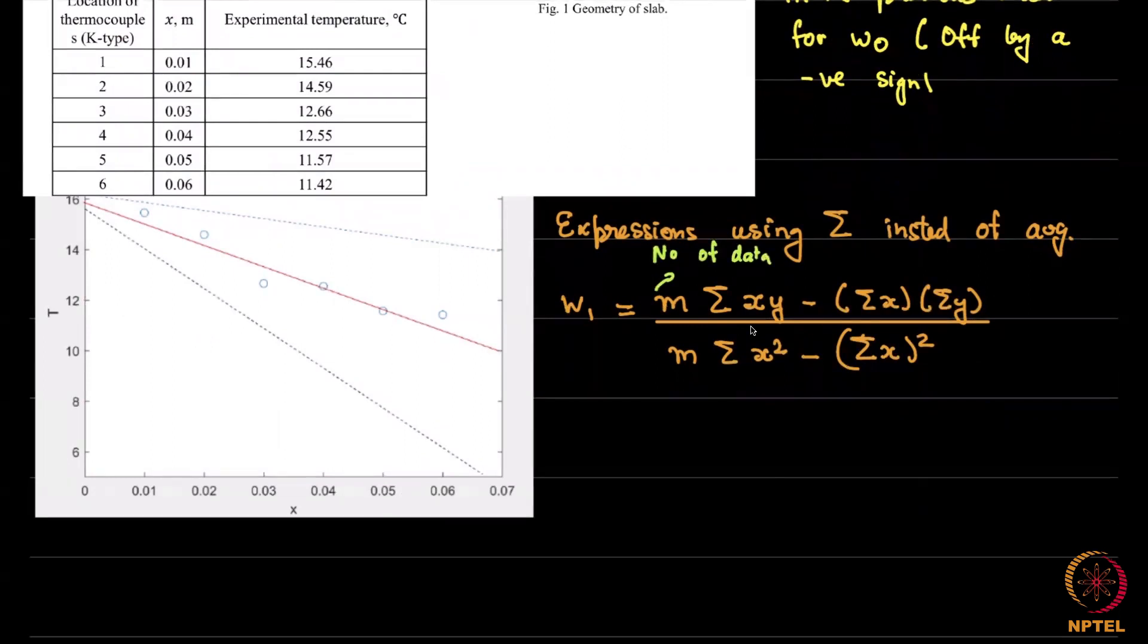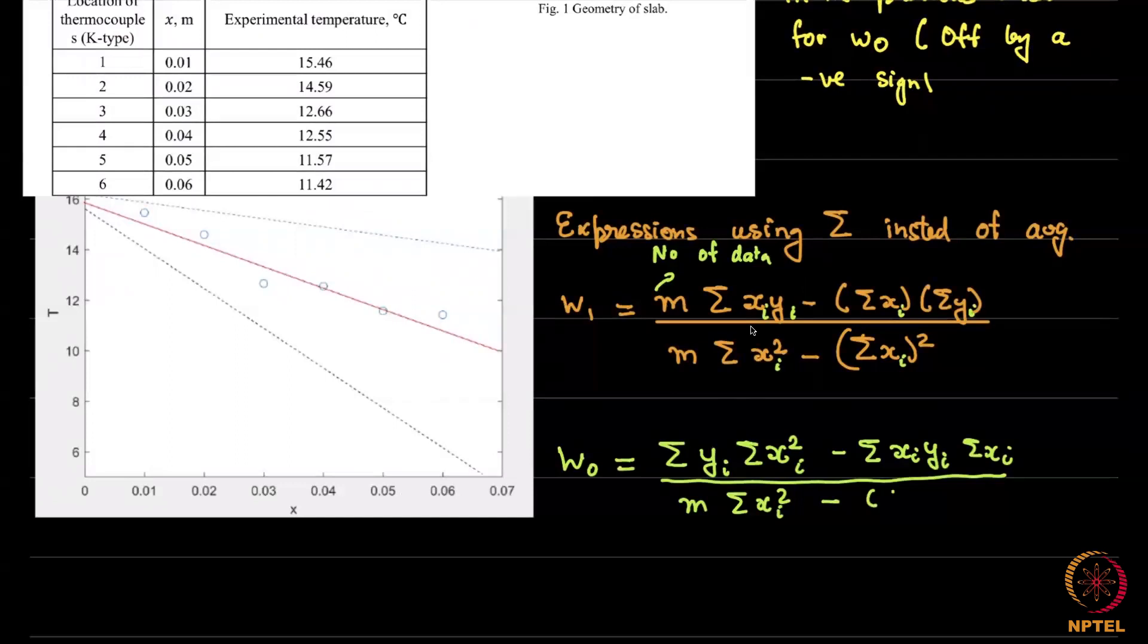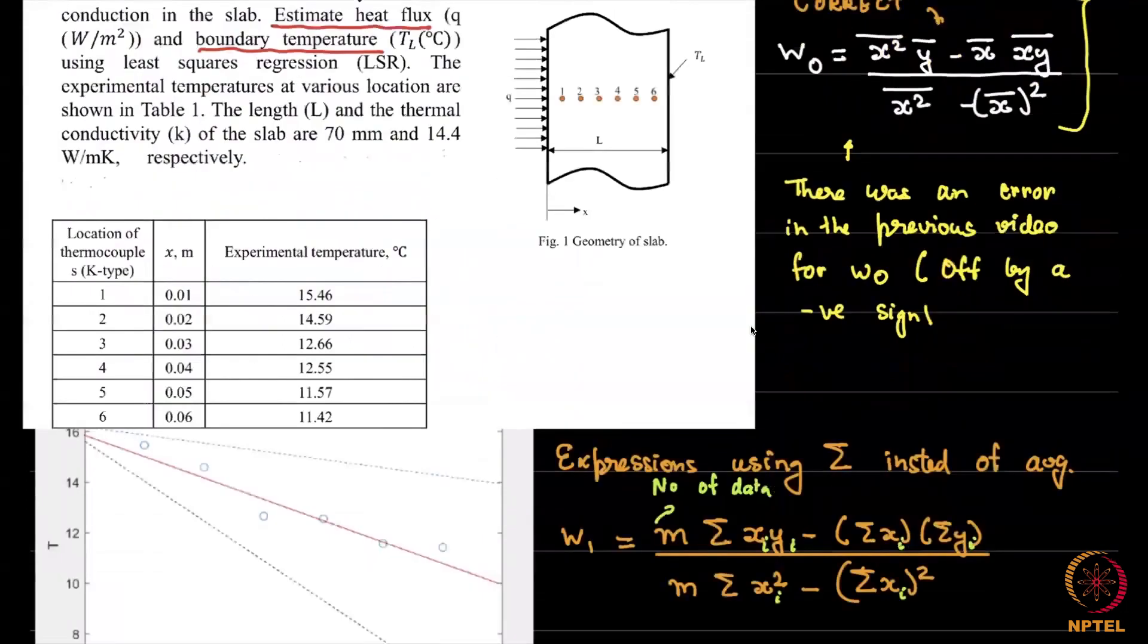Similarly, we can write an expression for w0 also. W0 is given by sigma y sigma x square minus sigma xi yi divided by m sigma x square minus sigma xi the whole square. So these are the expressions that we have.